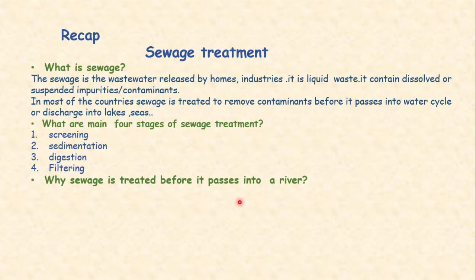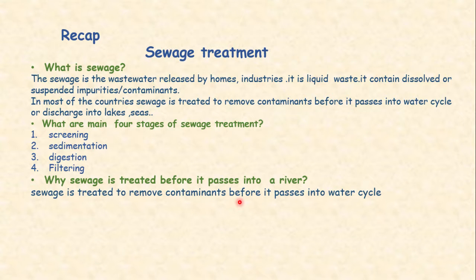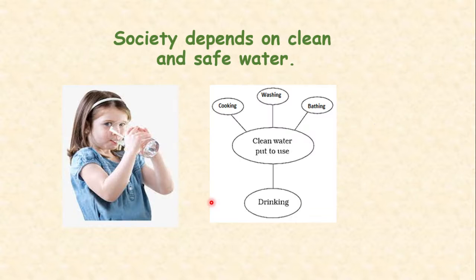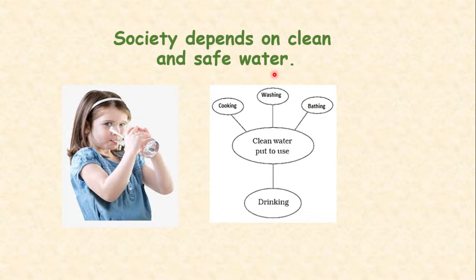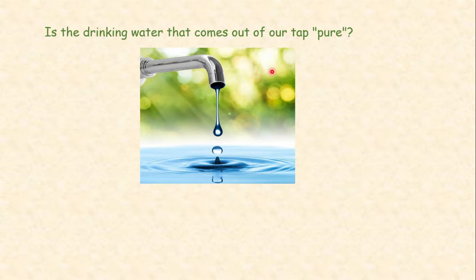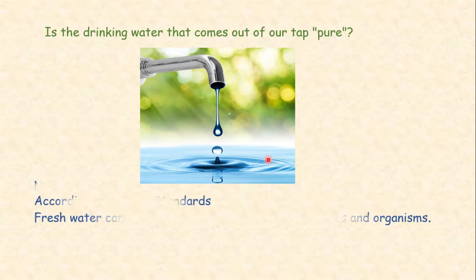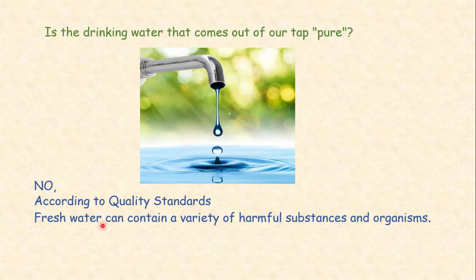The basic purpose of sewage treatment is to remove the contaminants or pollutants from sewage before it is discharged into water bodies. We all humans depend on clean and safe water — water that we use for drinking, cooking, washing, and bathing. Is the drinking water that comes out of our tap pure? No. According to quality standards, fresh water can contain a variety of harmful substances and microorganisms.